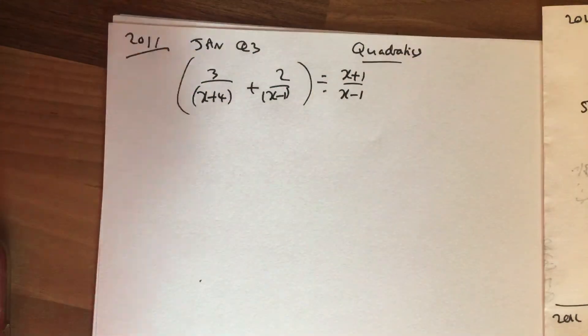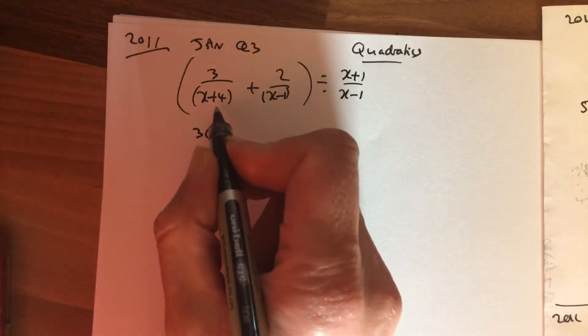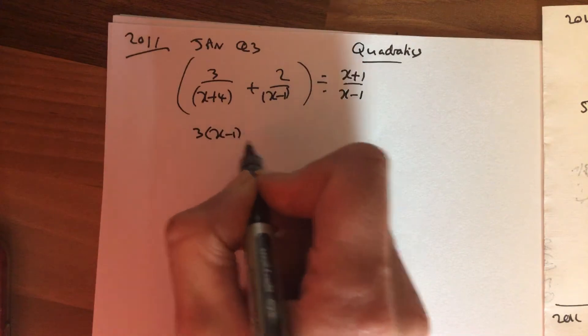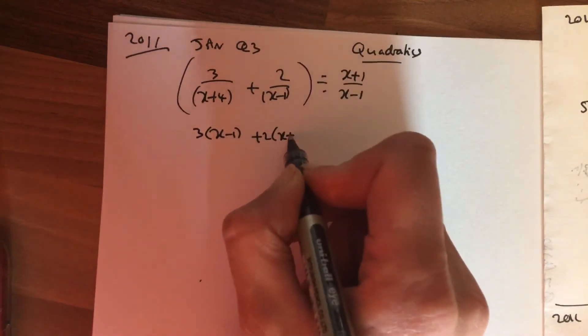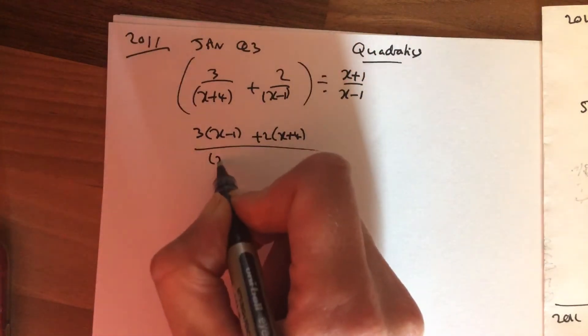First of all, make the bottoms the same. So this one needs an extra x minus 1, this one needs an extra x plus 4. Bottoms are now the same.